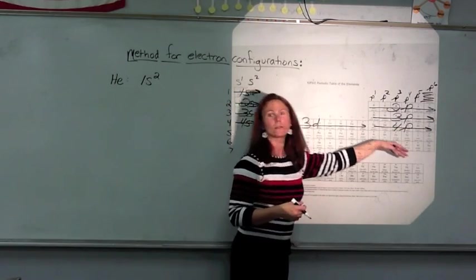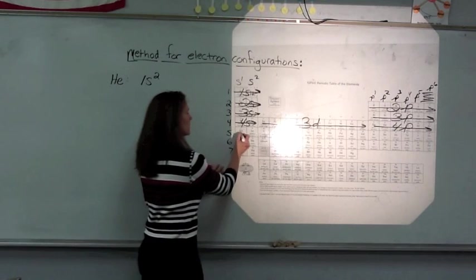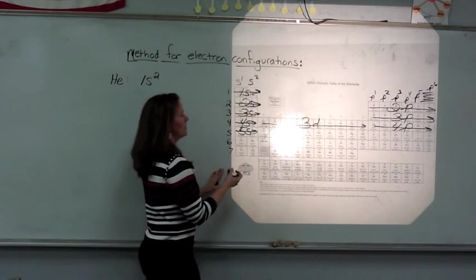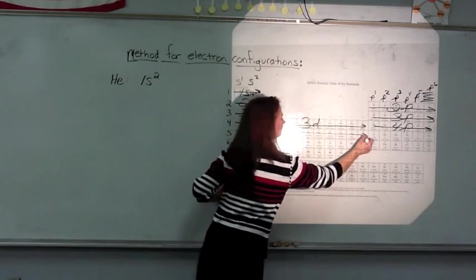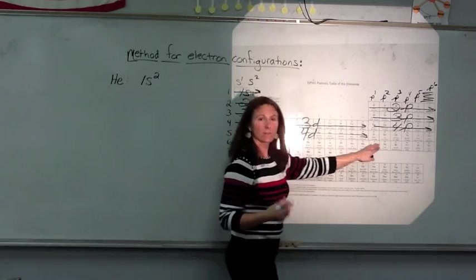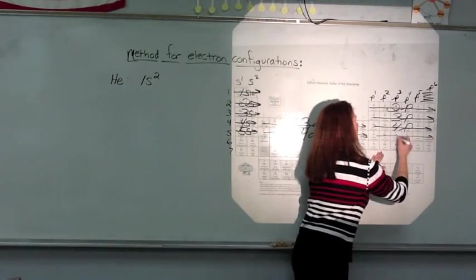After the 4p, we are out of elements. So we are going to come back over to the left side again and fill the 5s. And then from 5s, we fill the 4d. After the 4d, we fill the 5p.